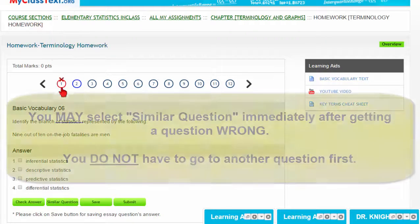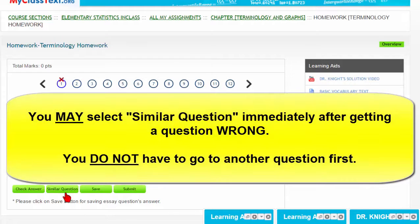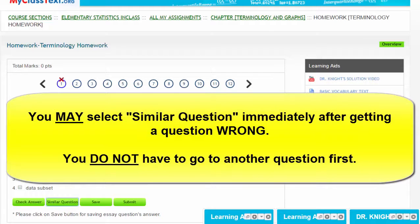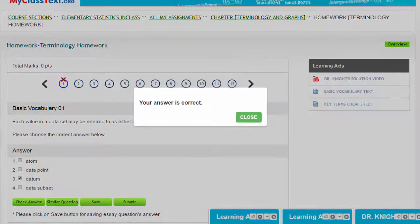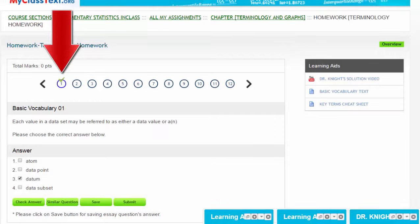We can go back to the first question, and we can select a similar question, and now attempt this problem. You attempt this problem in the same way since it's a multiple choice, and when we check the answer, we see that it's correct. When we click close, you'll notice that the red X above the number one turned to a green check.